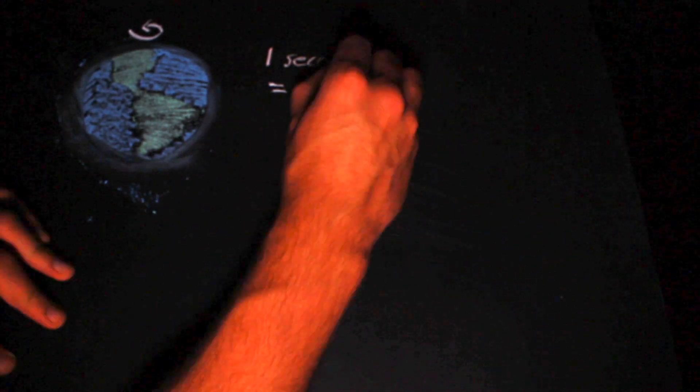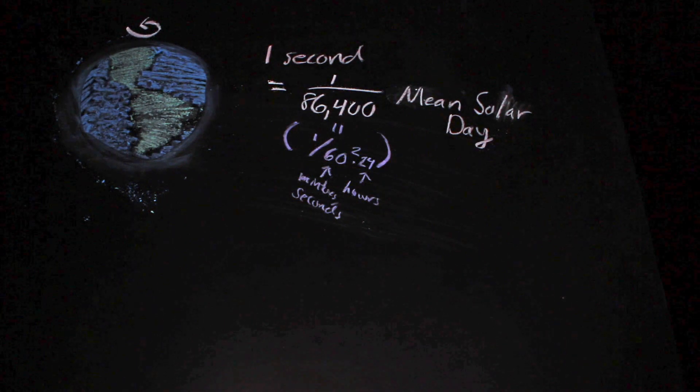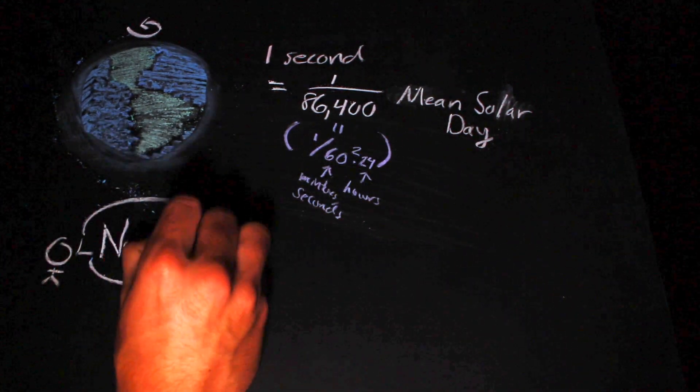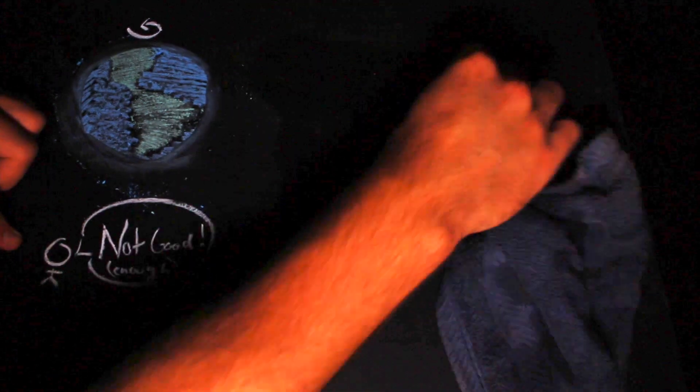At first, the second was defined as 1/86,400th of a mean solar day. A problem arose, however, with this definition when discrepancies in the Earth's rotation could not be adequately accounted for.